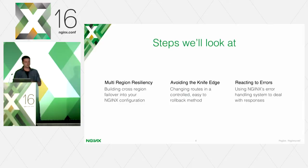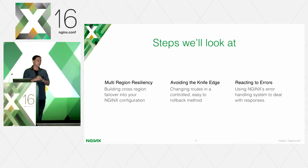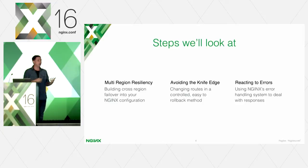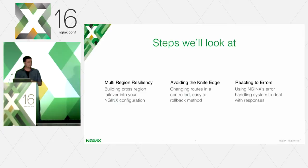The second thing I want to touch on is avoiding the knife edge. At Expedia we really try to focus on making slow changes. If a new app or microservice is taking traffic, we want to do that in a slow controlled manner and have a way to roll that back as quickly as possible. The last thing is reacting to errors — how we set up our proxy to react to errors coming back from our microservices.